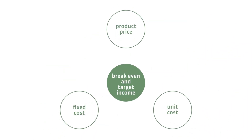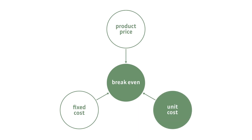A change in unit cost, product price, and fixed cost will change the breakeven point and the target income. Let's focus on the impact on the breakeven point right now. To check how these factors will affect the breakeven point, let's change each of them separately.